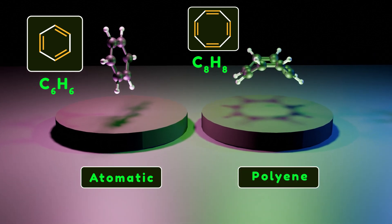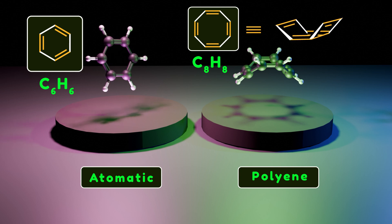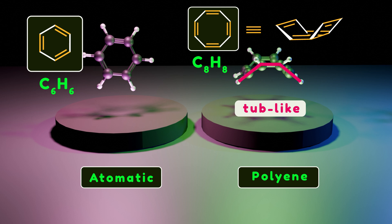Benzene is an aromatic compound while cyclooctatetraene is a polyene which is more reactive than benzene. The reason for this difference is that cyclooctatetraene is not a planar molecule and adopts a tub-like conformation. As a result, the double bonds cannot effectively interact with each other to form an aromatic system.